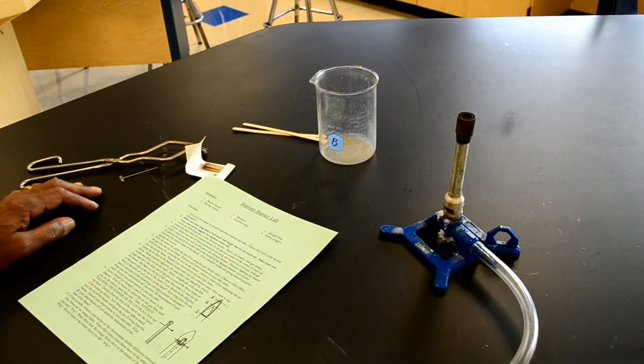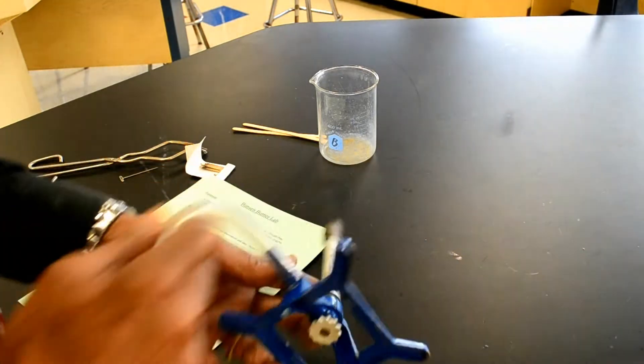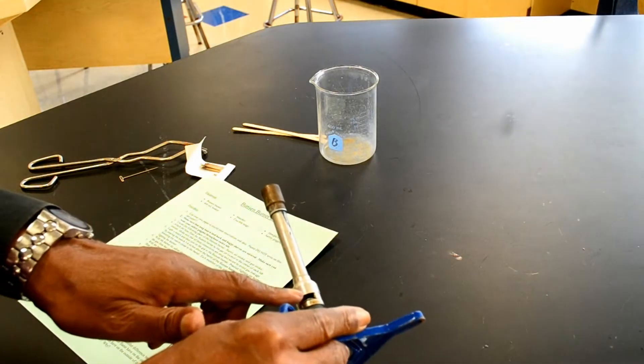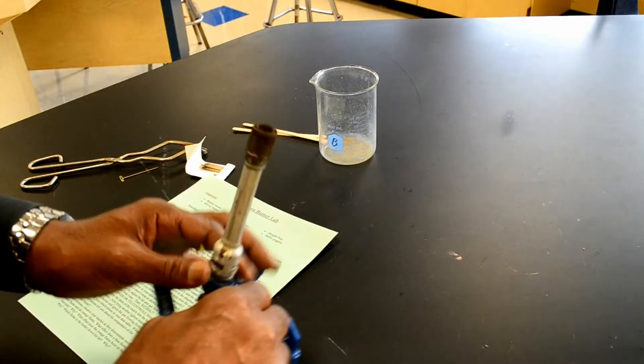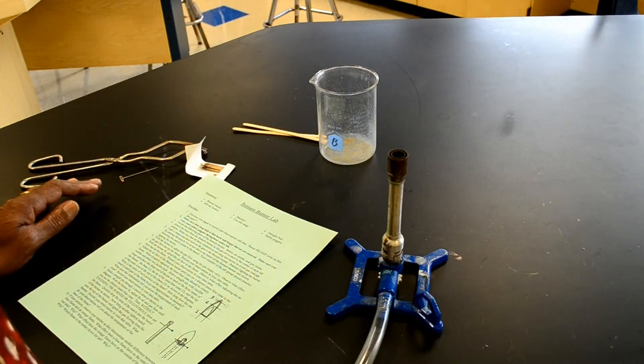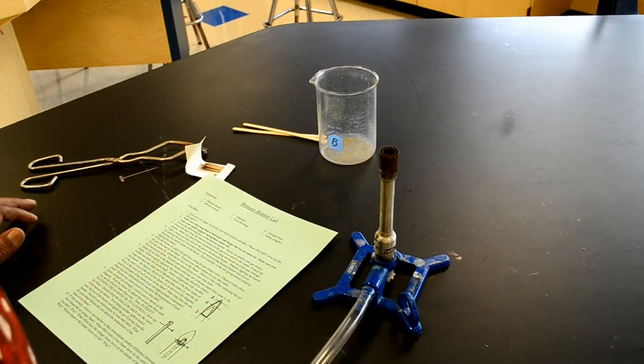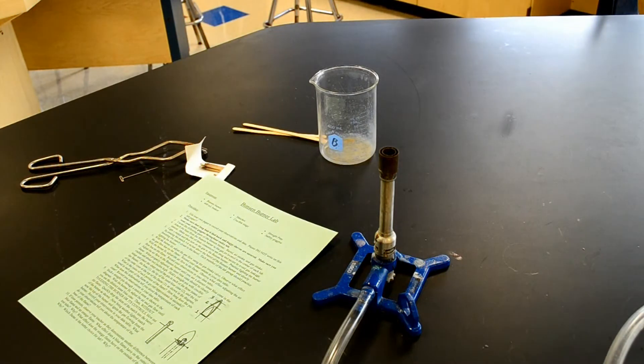Now for the procedure. It says locate the parts of the Bunsen burner where we have the barrel, we have the air intake, and the gas intake. Then it says attach the burner hose to the gas jet in the center of the lab station. Make sure all hose connections are secured to avoid gas leakage. So I'm going to secure the hose to the jet. And we're done. It's snug.